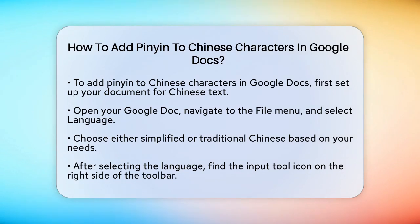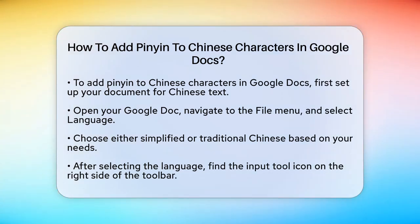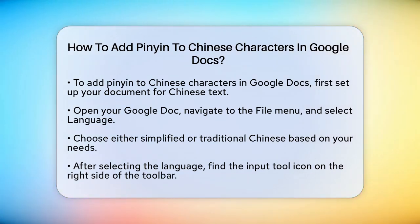First, you need to set up your Google Doc to support Chinese characters. Open your Google Doc, go to the File menu, and select Language. Here, you can choose either Simplified Chinese or Traditional Chinese, depending on what you need.